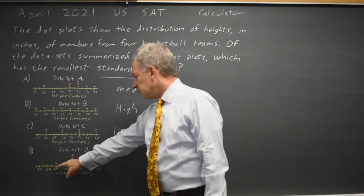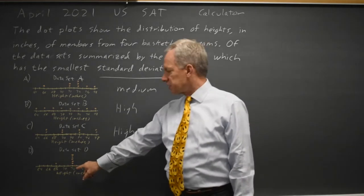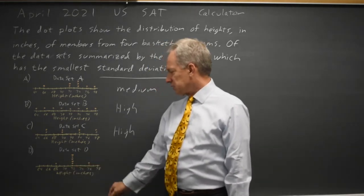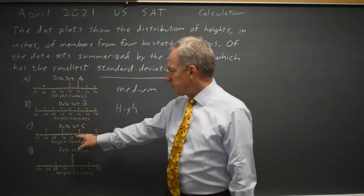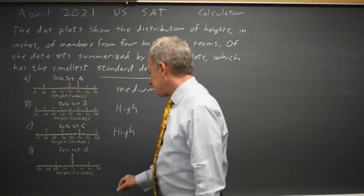And data set D, where all the points except for two have the same values, they're not spread out at all. And those two points are not as far away from the median as the most extreme points in any of the other data sets.